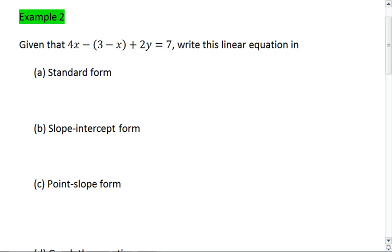Example 2. So example 1 was the spur-of-the-moment one with Luke walking. In example 2, we're given an equation: 4x minus the quantity 3 minus x plus 2y equals 7.